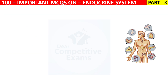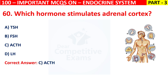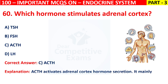Question 63: Which hormone stimulates the adrenal cortex? Your options are TSH, FSH, ACTH, or LH. The correct answer is C, that is ACTH hormone. ACTH hormone activates adrenal cortex hormone secretion. It mainly increases cortisol production.